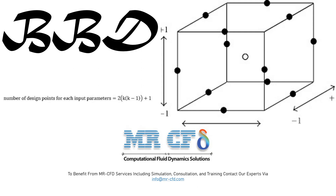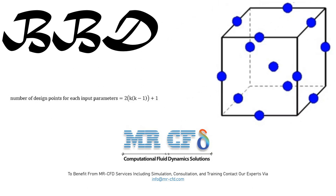The number of design modes in the BBD model is obtained from the following equation, in which K is the symbol for the number of input parameters or factors. According to this formula, the number one represents the only case in which all factors have their mean value, i.e., level zero. The expression 2K(K-1) indicates the state in which, for each parameter, its mean is held constant while the other parameters take their maximum and minimum values, level one and level minus one.